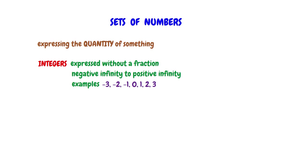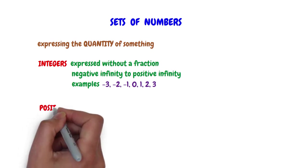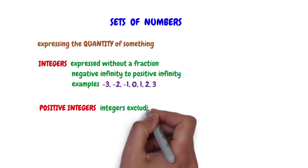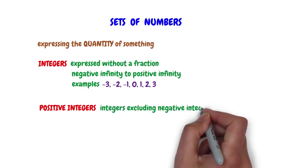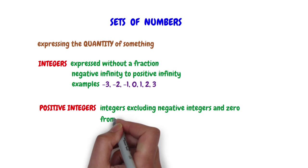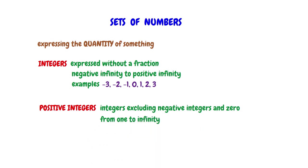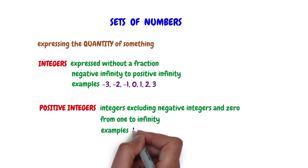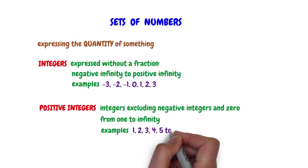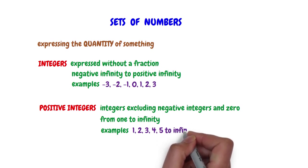The second set of numbers is the positive integers. As the name suggests, positive integers are integers excluding negative integers and 0. These sets of numbers start from 1 to infinity. Examples of positive integers include 1, 2, 3, 4, 5 to infinity.